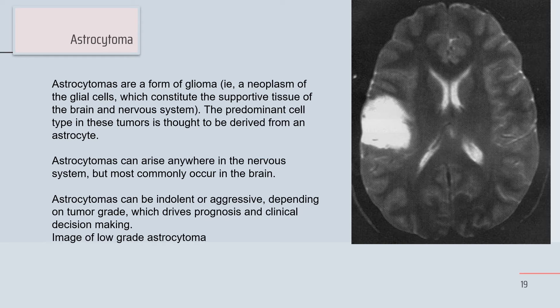Astrocytomas are a form of glioma — a neoplasm of glial cells that constitute the supporting tissue of the brain, with the predominant cell derived from the astrocyte. They can arise anywhere in the nervous system but most commonly in the brain. Astrocytomas may be indolent or aggressive, and according to their grading, the tumor grade will determine prognosis and clinical decision making. Low-grade astrocytoma shows regular enhancement, may be encapsulated, compressing, non-infiltrating, with no areas of hemorrhage or necrosis.